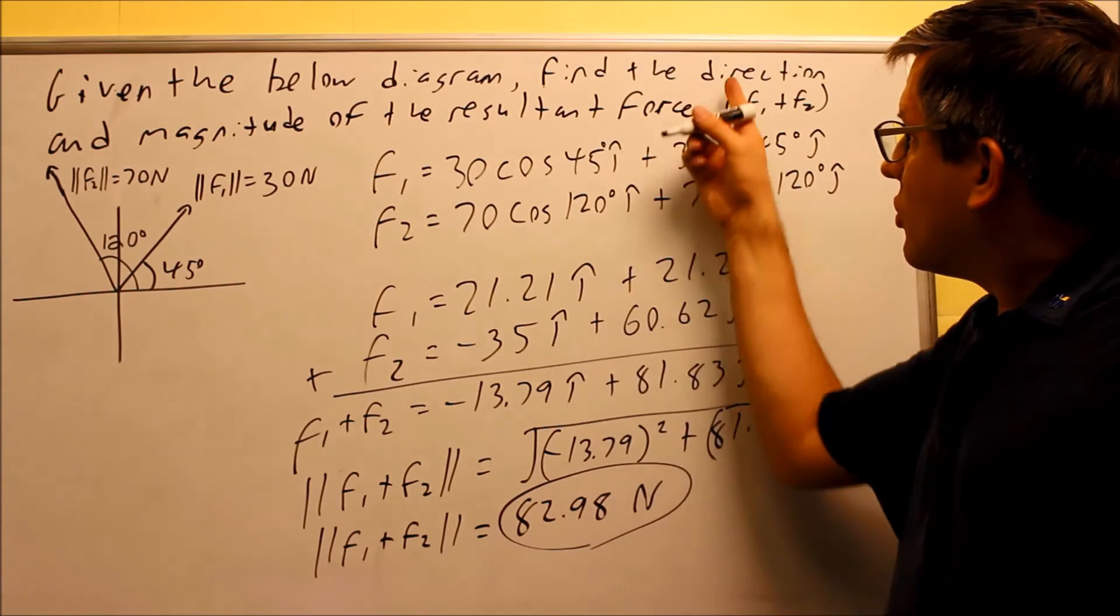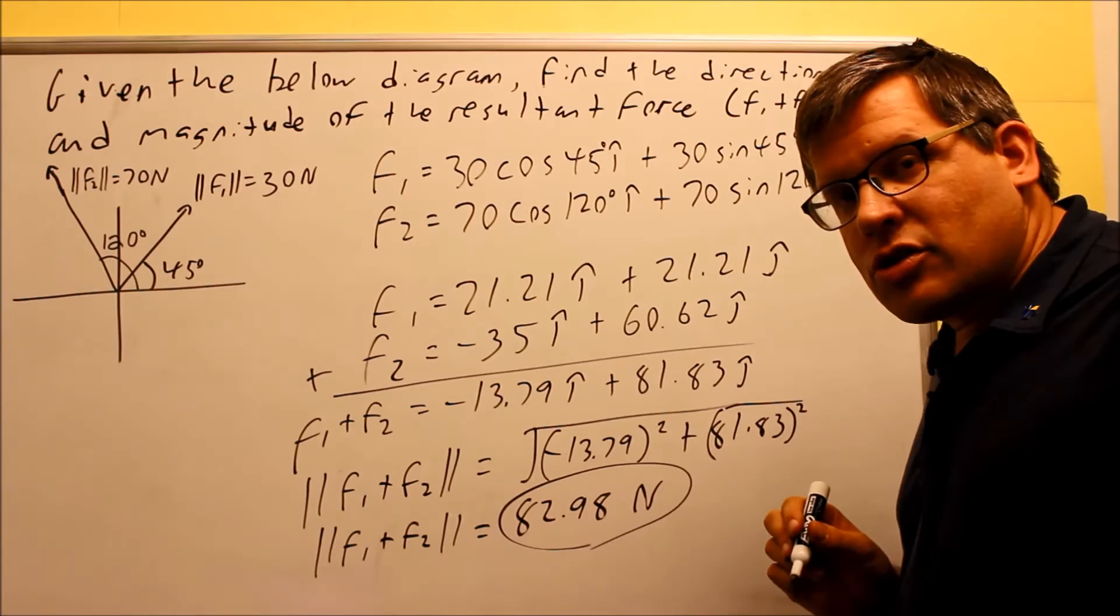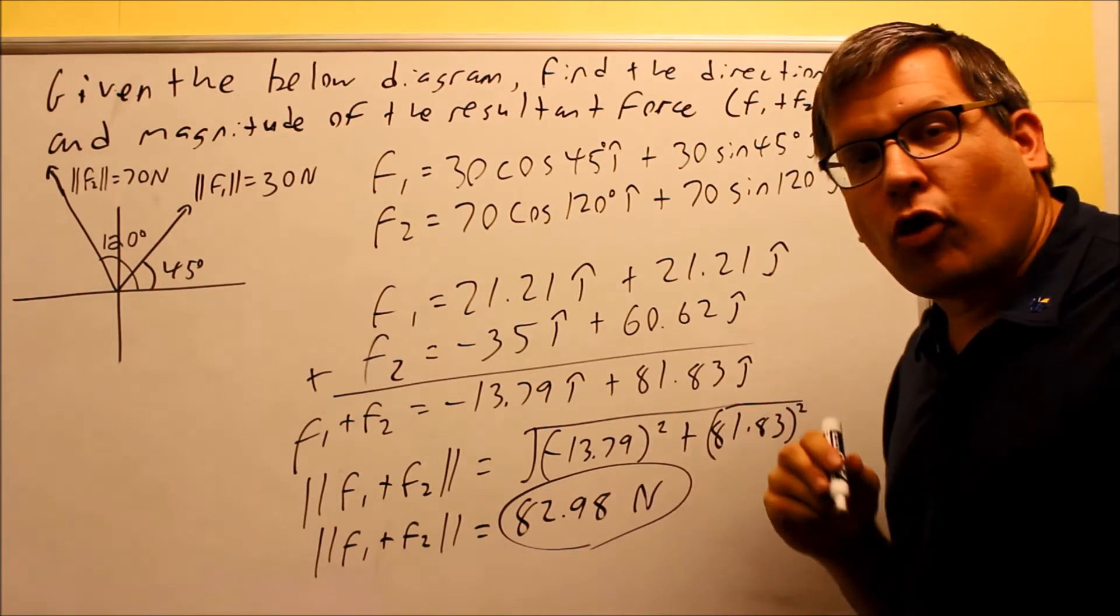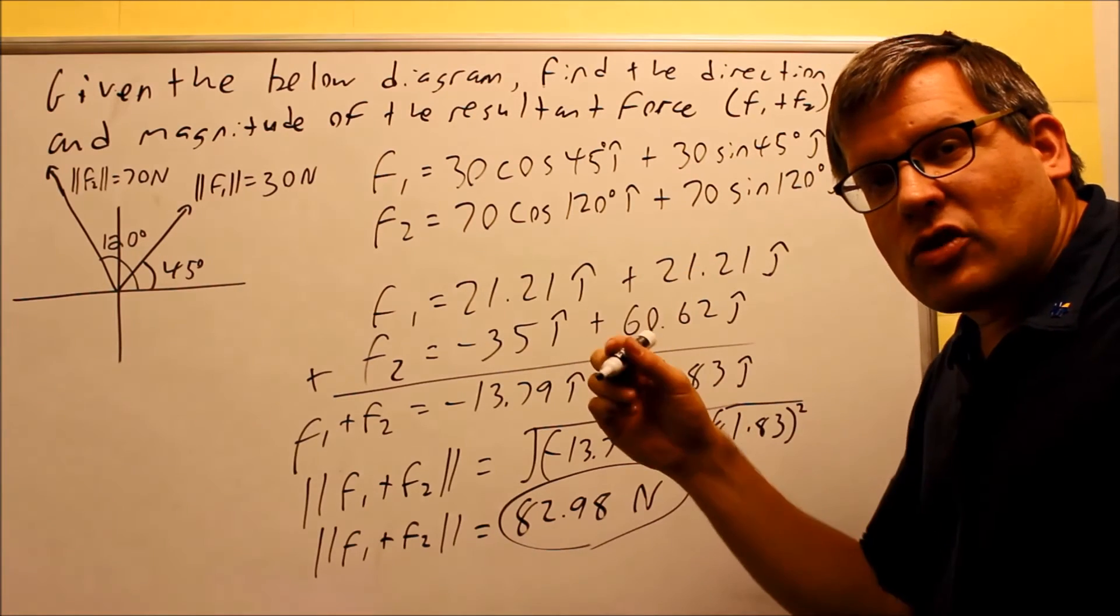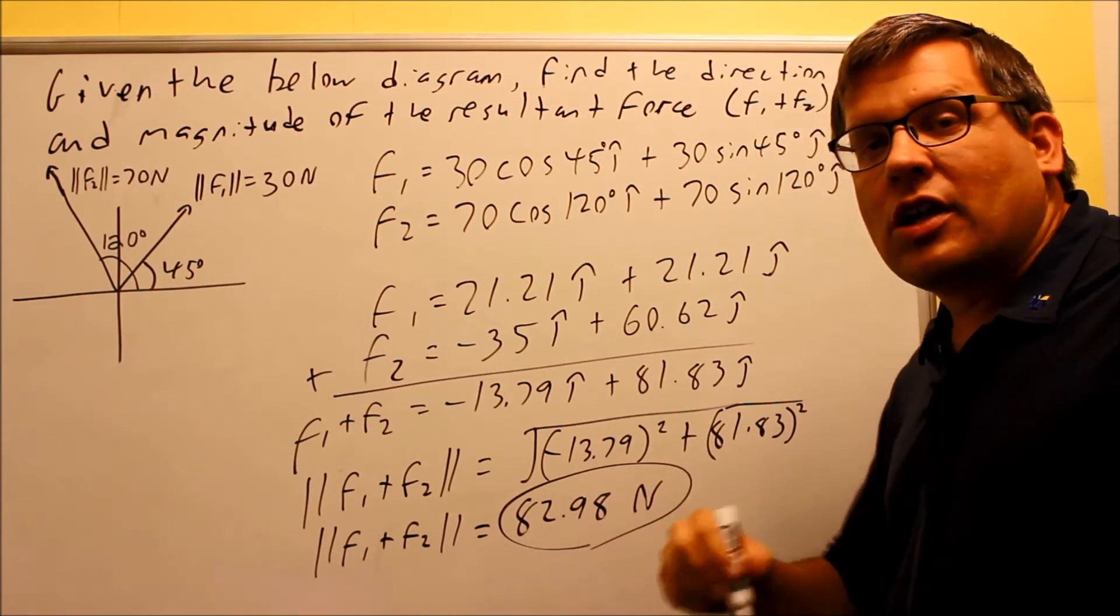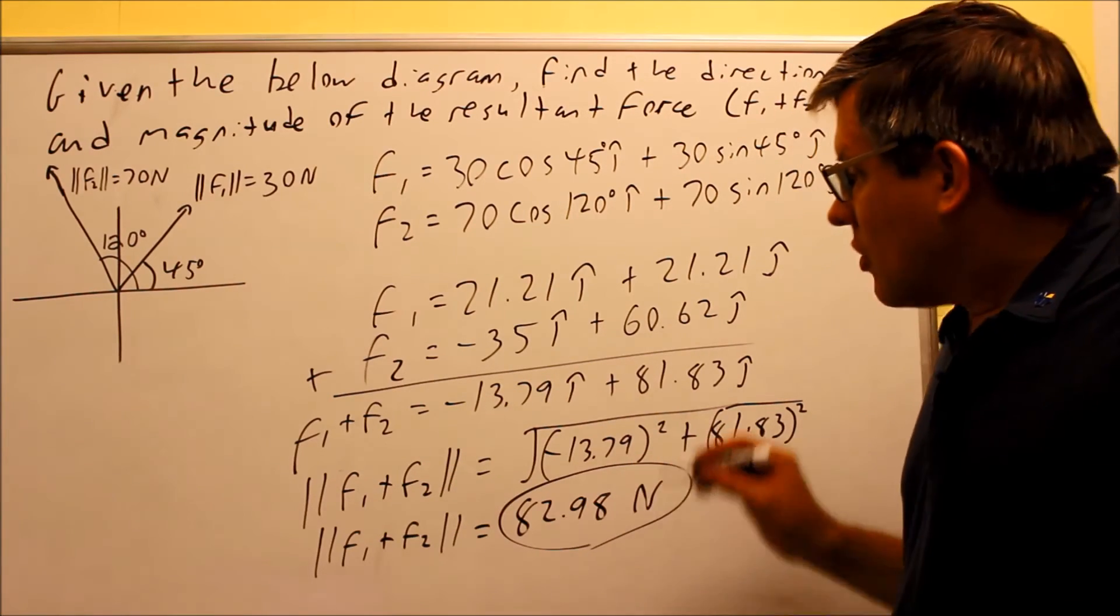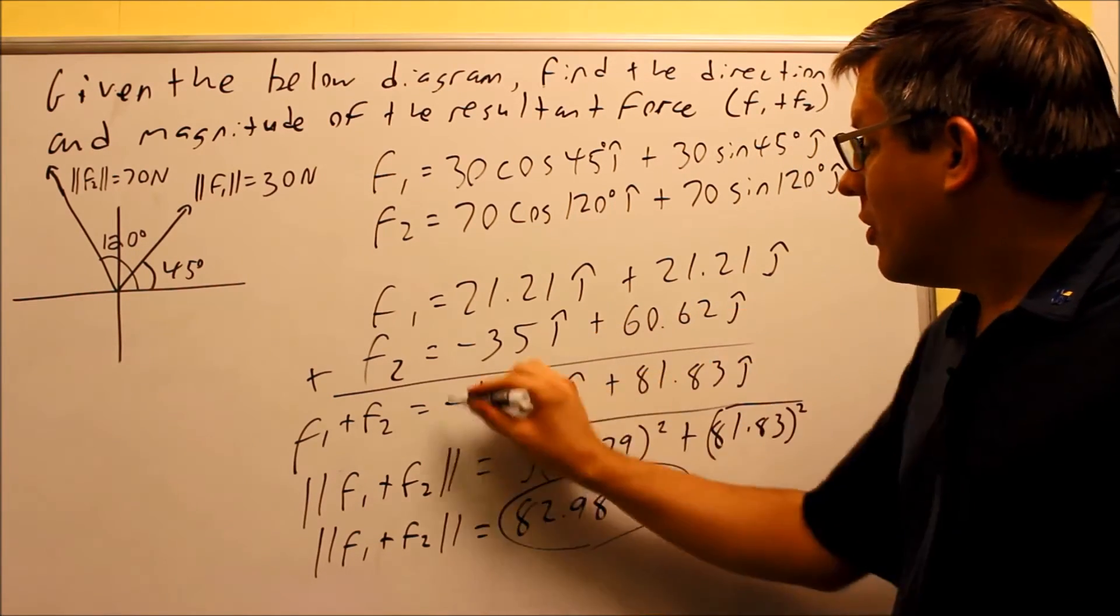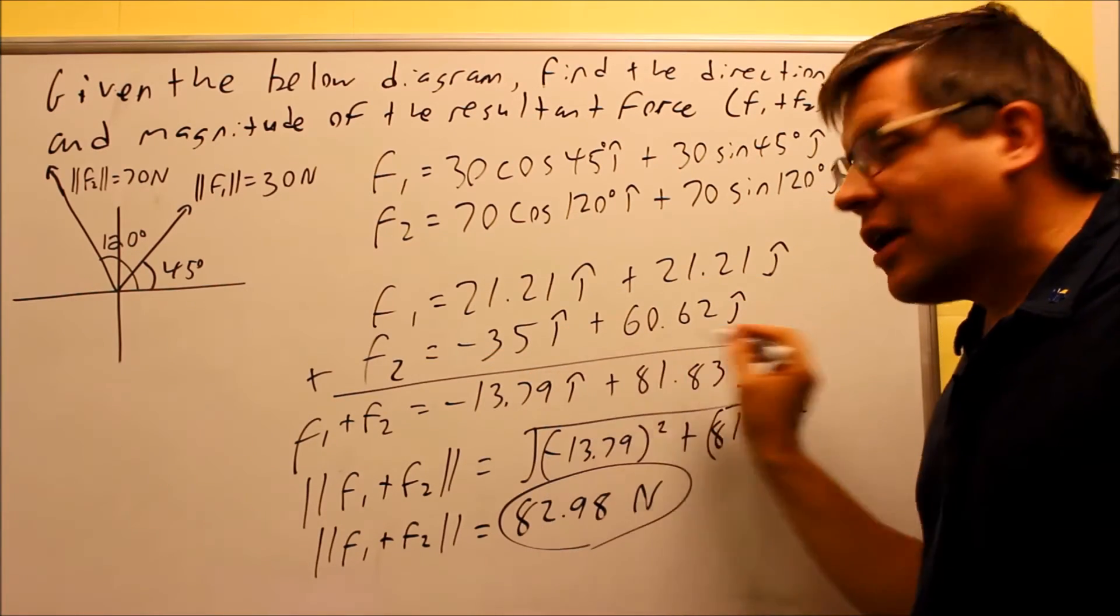Now, the other thing we want to find is the direction of the resultant force. So, in order to do the direction, we have to use one of those two formulas we talked about that involves the inverse tangent. So, it's the inverse tangent of B over A, but depending on which quadrant that we're in, we need to either add 180 or leave it, don't add anything. So, I have to figure out which quadrant this vector is in.